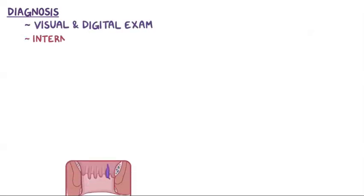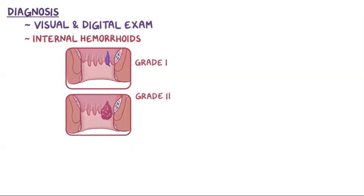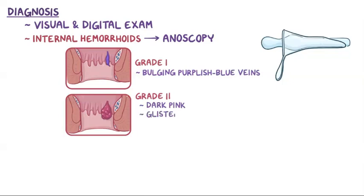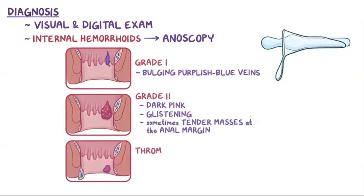A diagnosis is usually made based on a visual and digital exam of the anus. However, internal hemorrhoids grade 1 and 2 lie inside the rectum, so they can't be seen or felt, and confirmation requires anoscopy, which involves the insertion of a hollow tube-shaped device with a light attached at one end. Internal hemorrhoids look like bulging purplish-blue veins, and prolapsed internal hemorrhoids appear dark pink, glistening, and are sometimes tender masses at the anal margin. Thrombosed external hemorrhoids are tender and have a purplish hue.